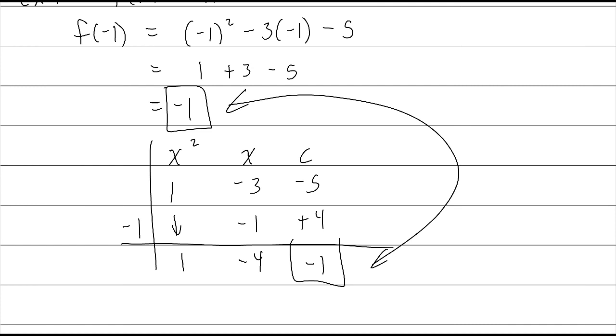That's the remainder theorem. You can use synthetic division to figure out a function value for a polynomial. You just do synthetic division with the number you want to plug in, and whatever the remainder comes out to be, it's the same thing as if you would have plugged it in. Maybe it's easier to plug it in, maybe it's easier to do synthetic division — you have options.